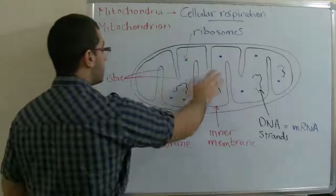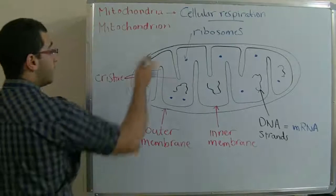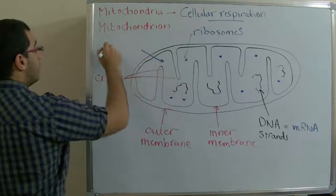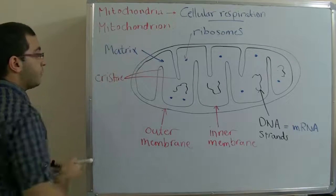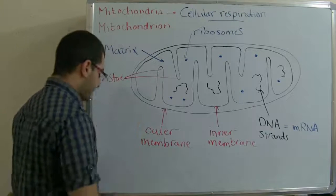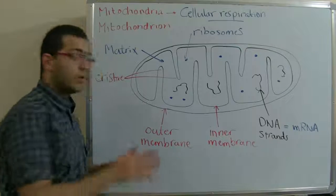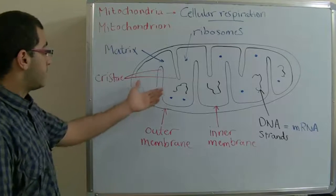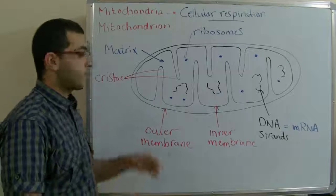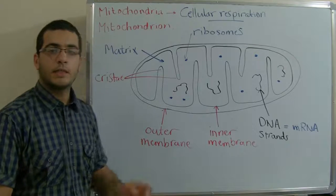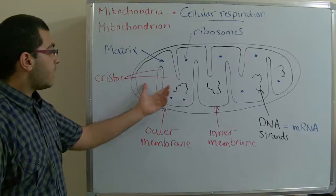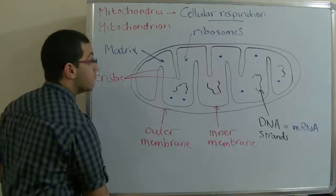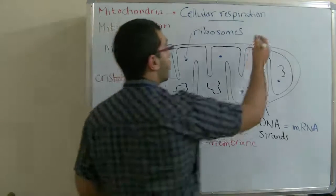And all these structures are embedded in the matrix of the mitochondria. The mitochondrion contains all the essential elements for carrying out the cellular respiration, as the coenzymes, the enzymes, and also some elements called the cytochromes.